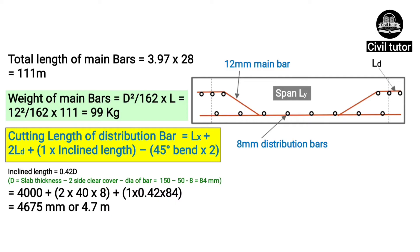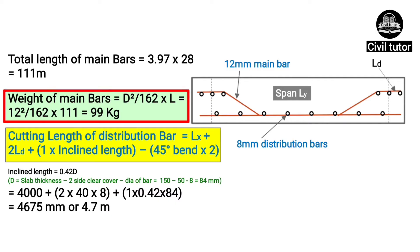The weight of main bars equals d squared upon 162, multiplied by the total length of main bars, which is 111 meters. The diameter of bars is 12 mm. Substituting these values, the weight of main bars equals 99 kg.